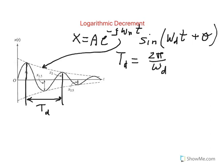Now let's go ahead and define the log decrement. Log decrement, denoted by delta, is the natural log — not L-O-G, but natural log — of the ratio of an amplitude to a consecutive amplitude. So here we have X1 and X2, or it could be X2 to X3. It's two consecutive amplitudes; you take the ratio, take the natural log, and that gives you delta.